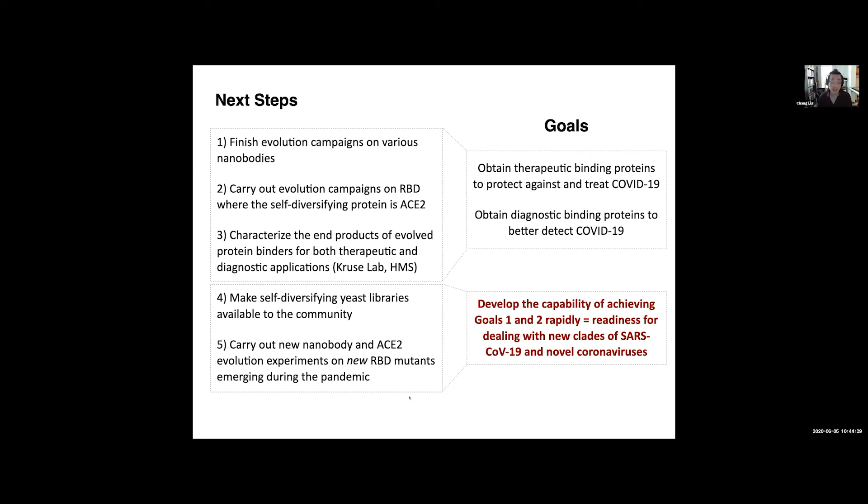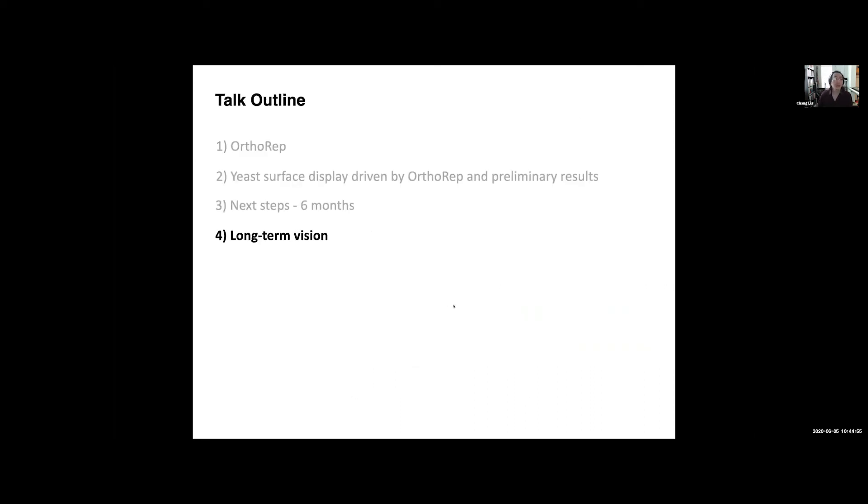We also have this idea with Debbie Marx's group where we're actually going to computationally predict gain-of-function mutations through a statistical analysis of what's happening both in COVID-19 as well as in just all coronaviruses to get a step ahead of what might happen in the population.